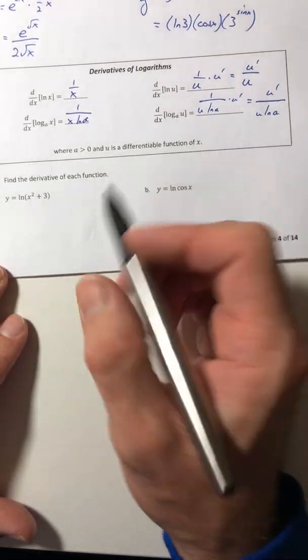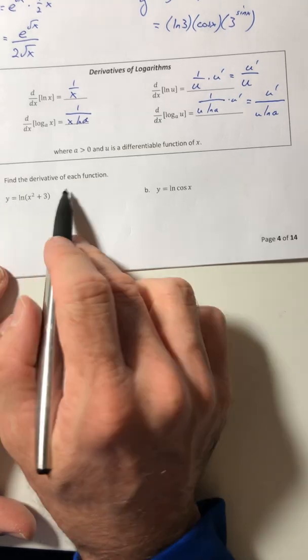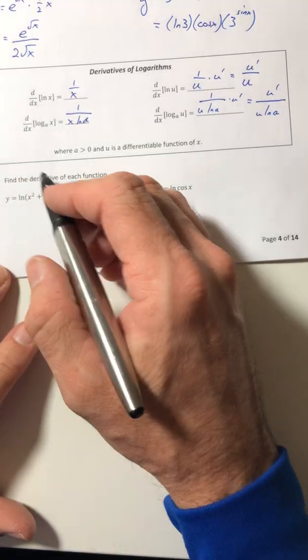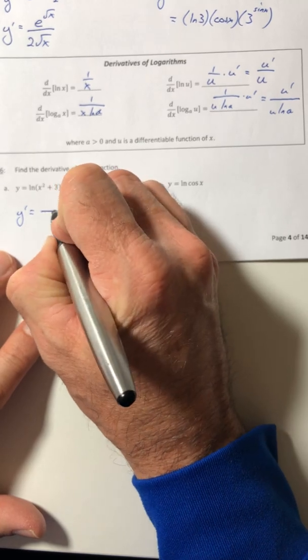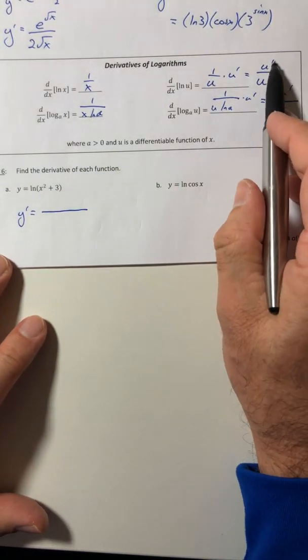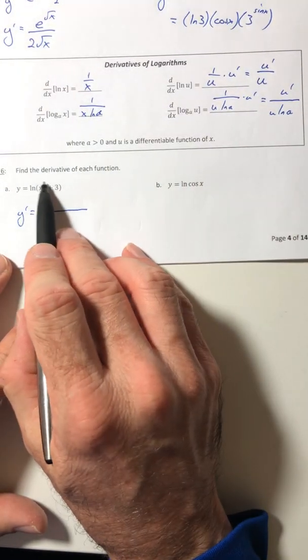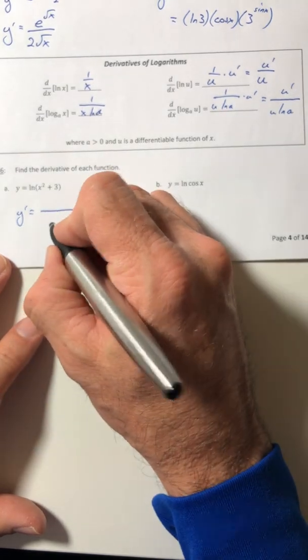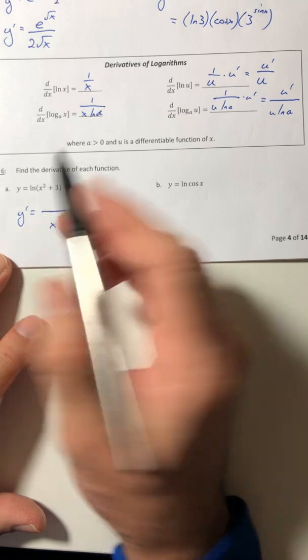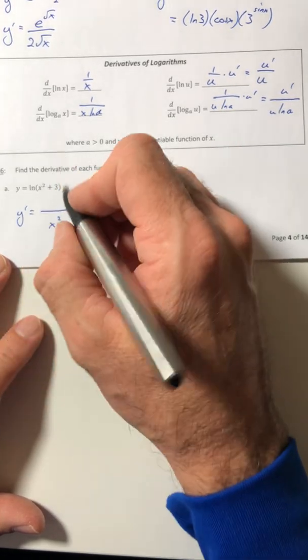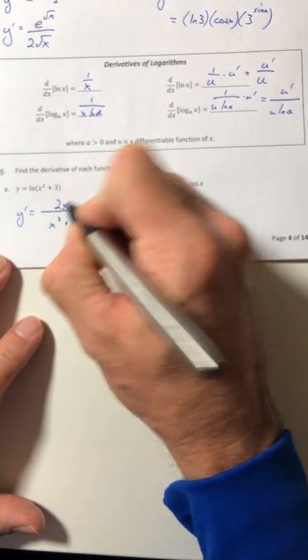So the derivatives of the logs, they can actually go pretty fast as long as you kind of realize what you're trying to get to. So for example, six, find the derivative of each of these. So it's just u prime over u. So whatever's inside the logarithm goes right in the denominator. And then on top is its derivative. So what's the derivative of x squared plus three? 2x.